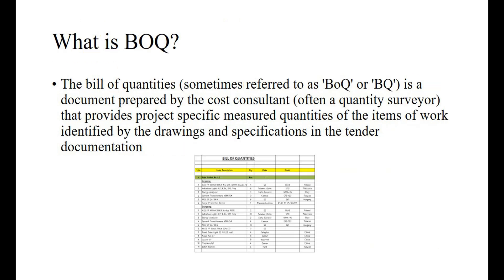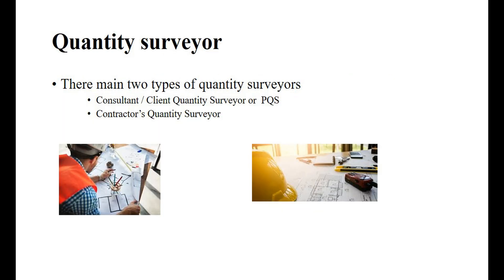Quantity surveying's main job is preparing BOQ. What does BOQ mean? The Bill of Quantities, sometimes referred to as BOQ or BQ, is a document prepared by the cost consultant — often a quantity surveyor — that provides project-specific measured quantities of the items of work identified by the drawings and specifications in the tender documentation.